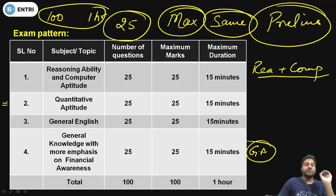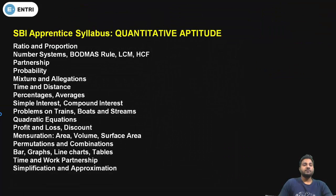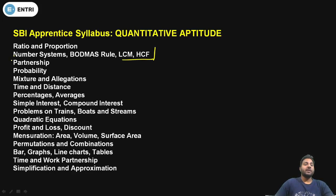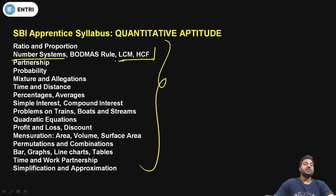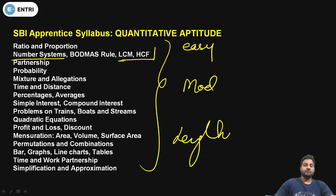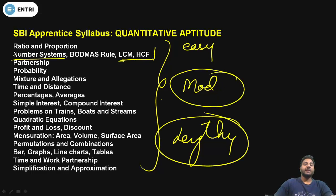Now let me take you to the Quant section. First of all, you need to know about the syllabus of Quantitative Aptitude. It is a bit different from a regular banking examination. They have included some advanced portions as well — Number System, LCM, and HCF. The whole syllabus is distributed in three parts: easy, moderate, and lengthy. You need to differentiate between moderate and lengthy to clear this examination.